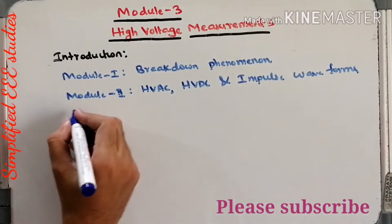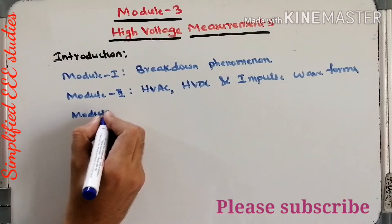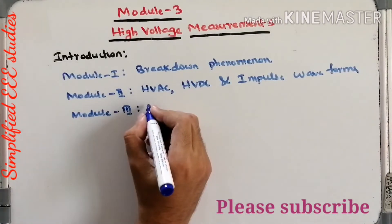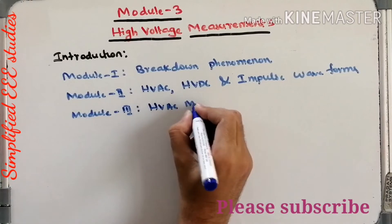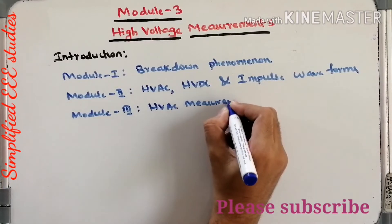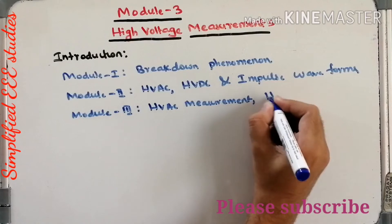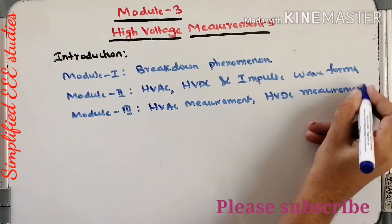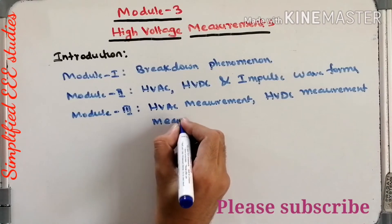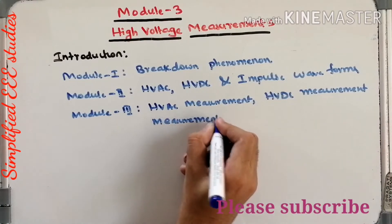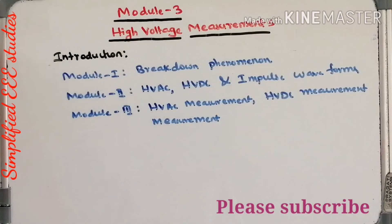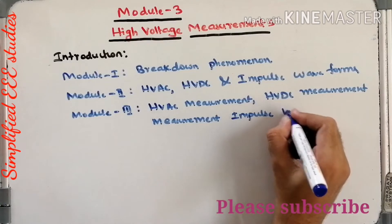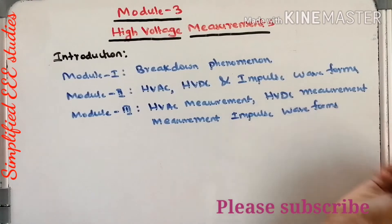In module 3, we will be discussing how to measure high voltage AC, DC, and impulse waveforms — such as measurement of impulse voltage and impulse current.